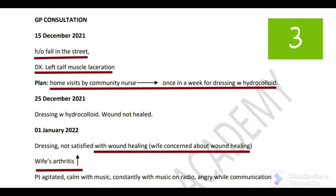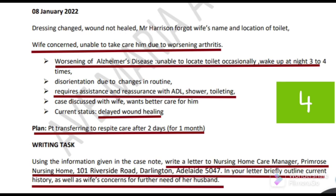During the home visit on 25 December 2021, the wound was not healed — no improvement. On 1 January 2022, you can see the dressing and he is not satisfied with the wound healing; his wife was also concerned about the delayed wound healing. At the same time, wife's arthritis was showing increasing signs and symptoms. The patient got agitated but calmed with music, constantly with the music on the radio, but angry while communicating. On 8 January 2022 — when you are writing the exam — this is the date of the letter. The dressing was changed and the wound is still not healed. Mr. Harrison forgot even his wife's name and the location of the toilet. His wife is more concerned because he could not find the person or the bathroom, and moreover he wakes up at night 3 to 4 times.